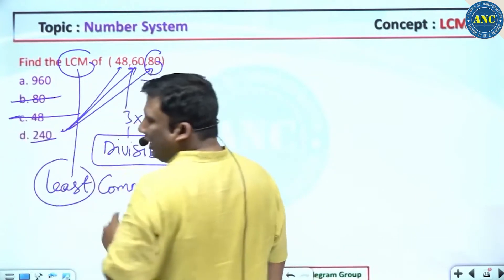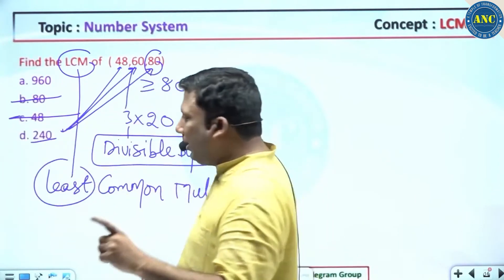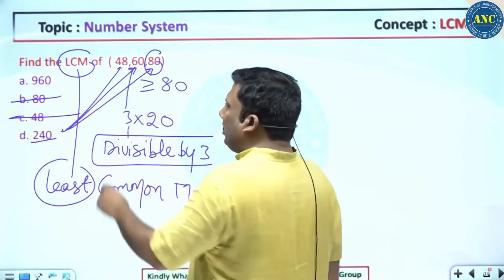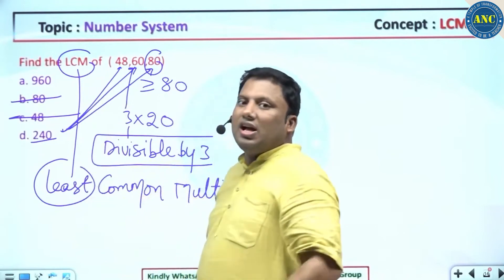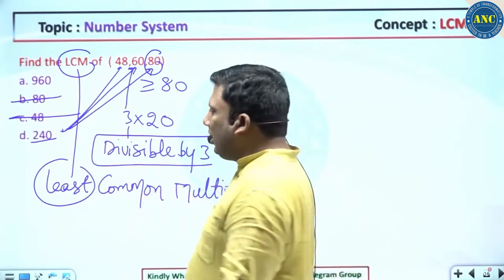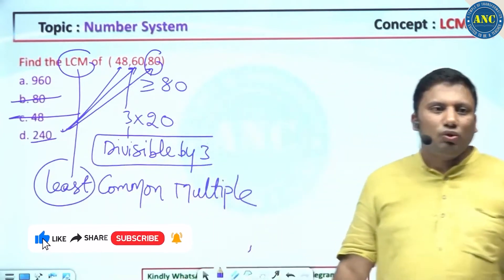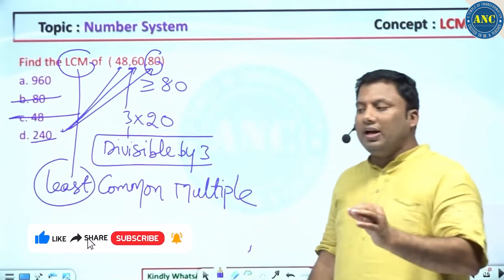Answer should be greater than or equivalent to 80. 48 is out. It is divisible by 3. 80—sum of the digits is not divisible. Definition of LCM is least common multiple. Take the smallest number: 240.